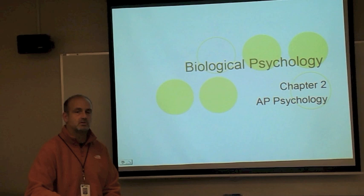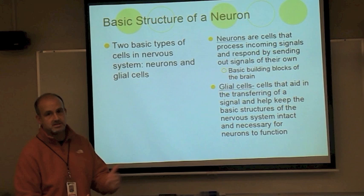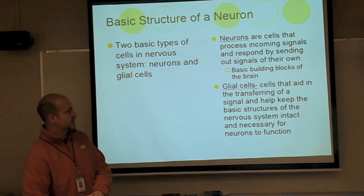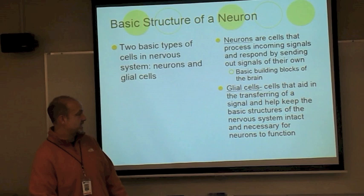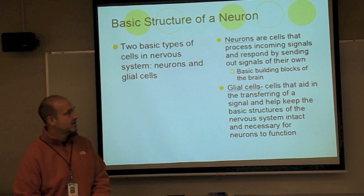How a person functions biologically will affect them psychologically as well. There are two basic types of cells. Neurons are cells that process incoming signals and respond by sending signals out to other neurons — they're basically the basic building blocks of the brain. The other type of cell is glia cells, which aid in transferring signals and keep the basic structures of the nervous system intact, helping neurons function and communicate throughout our brain and body.